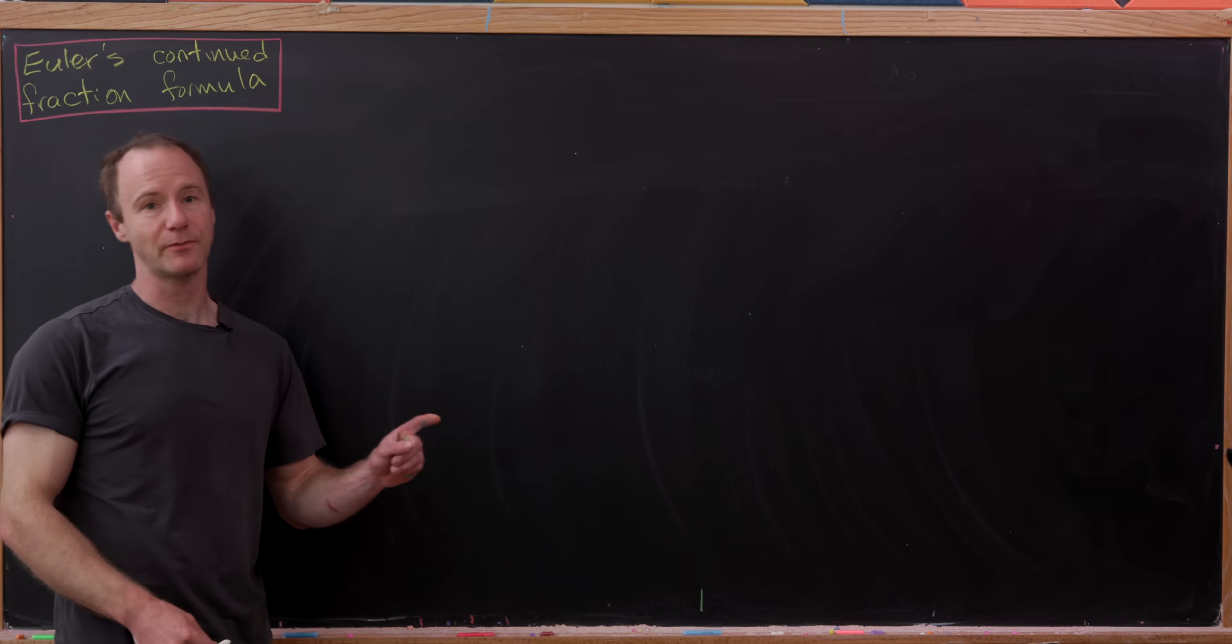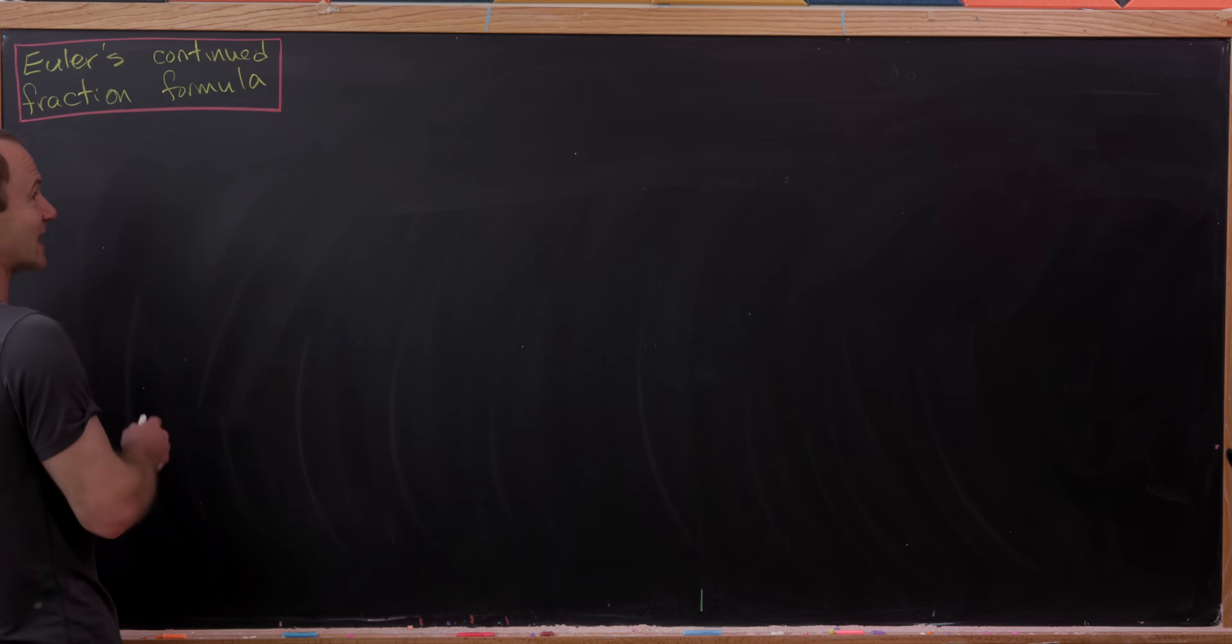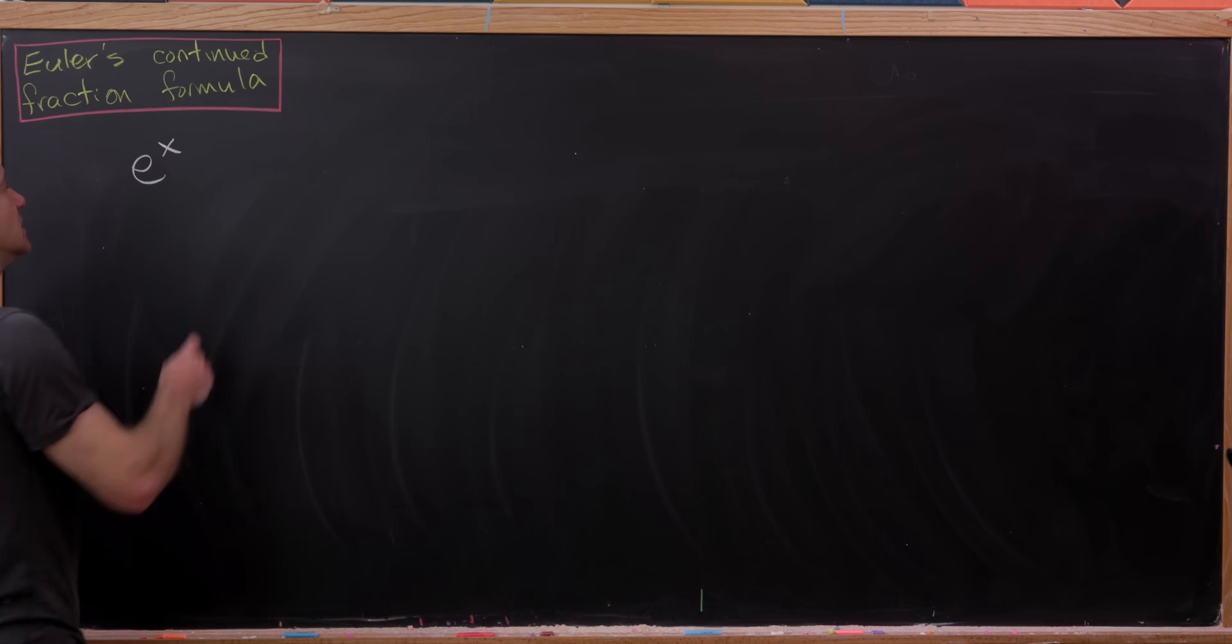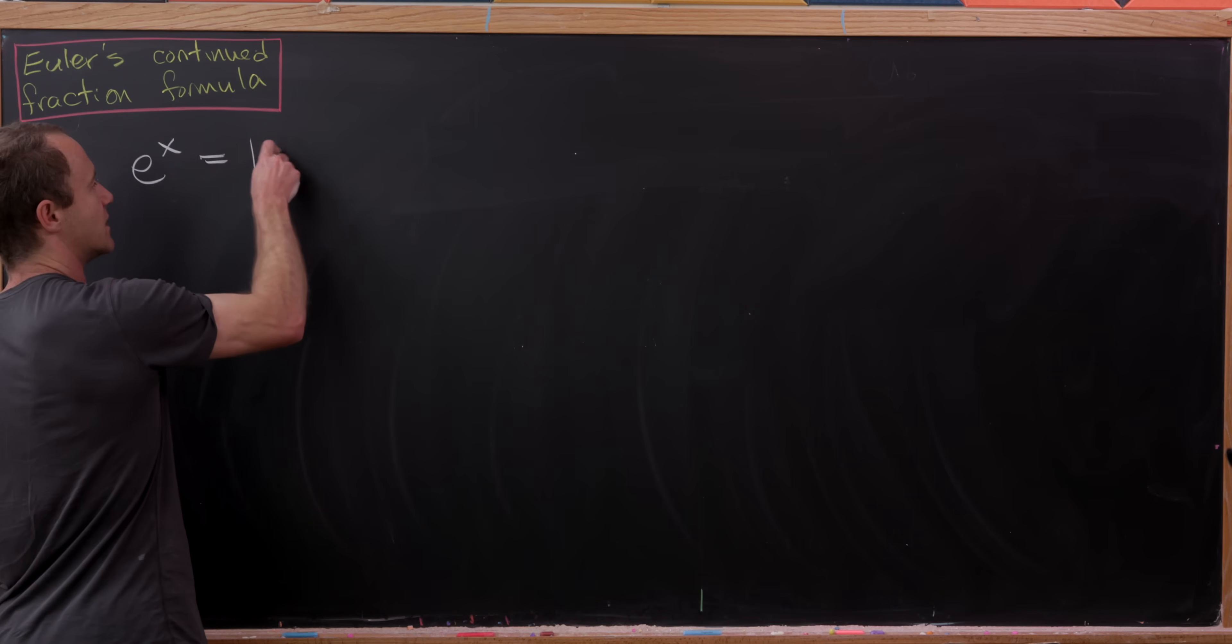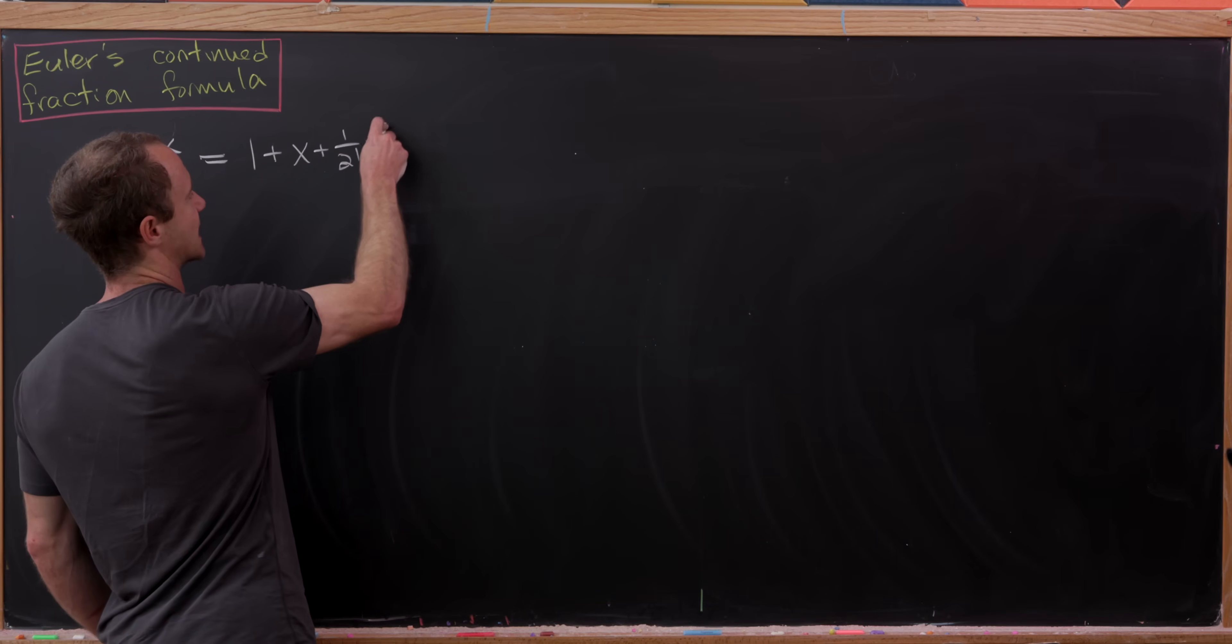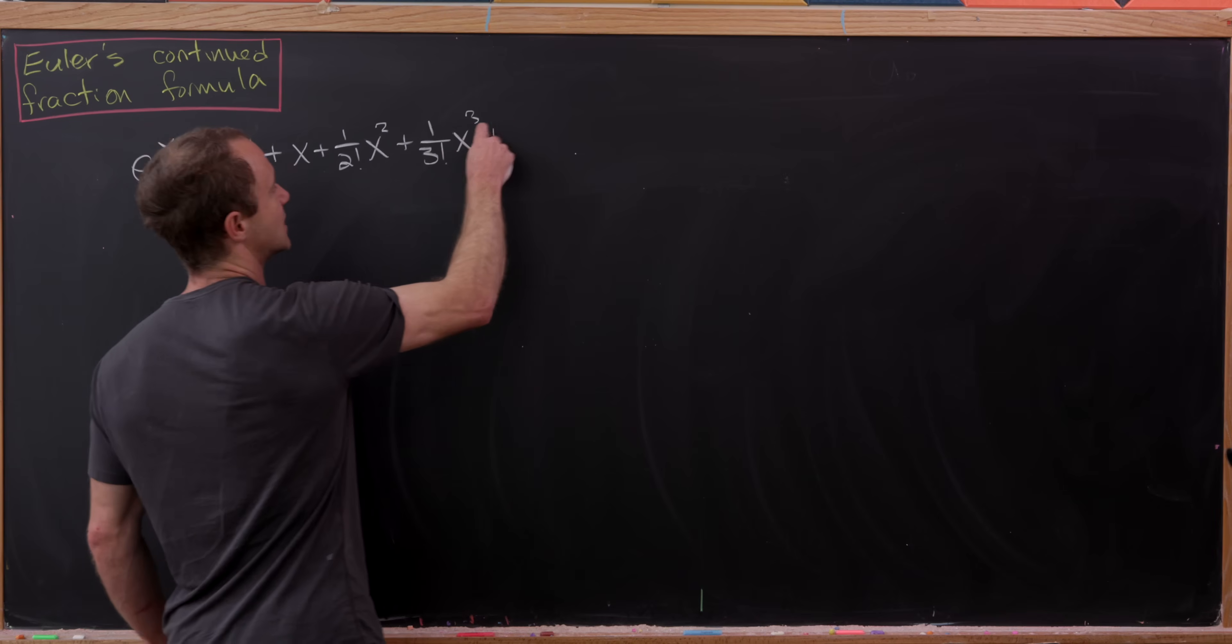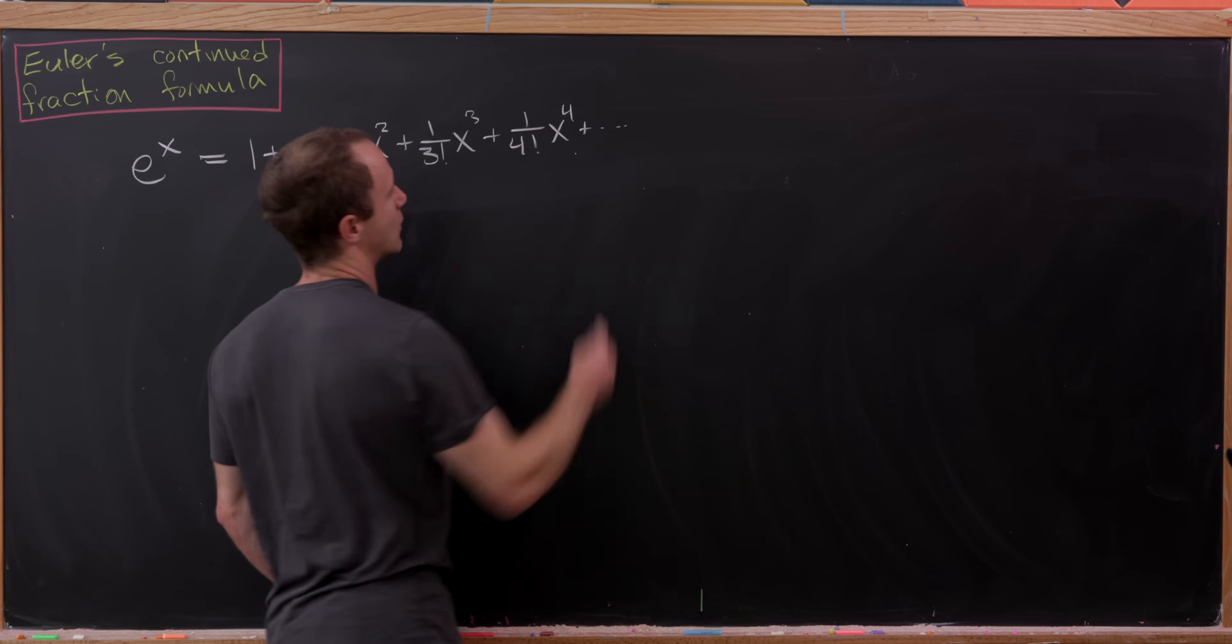So like we said before, our application will be to find a formula for Euler's constant, but we can actually do better. We can find a formula for the function e to the x. So let's write this out via its power series expansion. This is 1 plus x plus 1 over 2 factorial times x squared plus 1 over 3 factorial times x cubed plus 1 over 4 factorial times x to the fourth and so on and so forth.